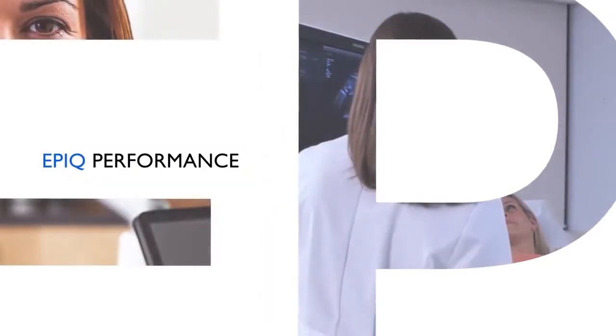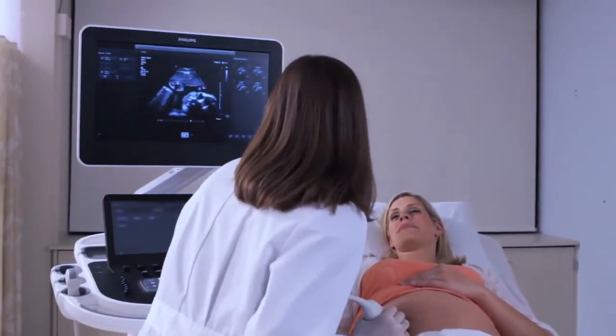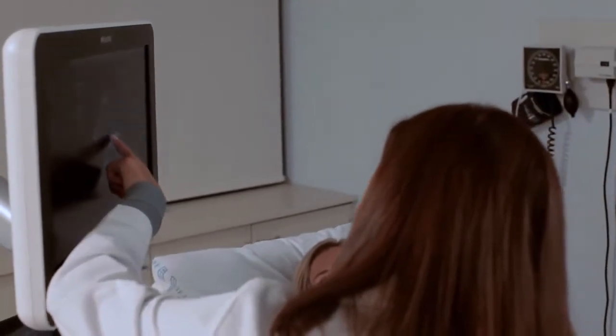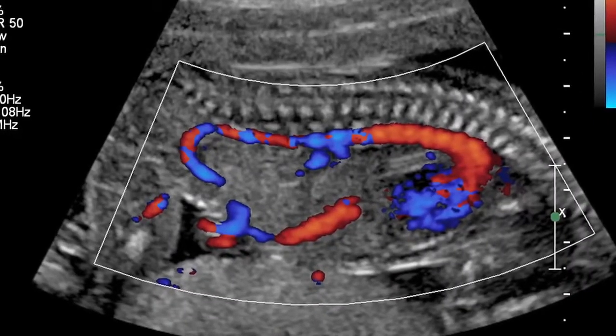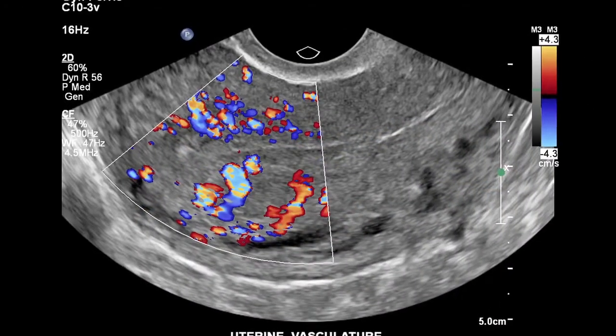The Philips proprietary Ensight imaging architecture introduces a totally new approach to forming exceptional ultrasound images. Unlike conventional systems that form the image line by line, Ensight creates images with optimal resolution down to the pixel level in real time.